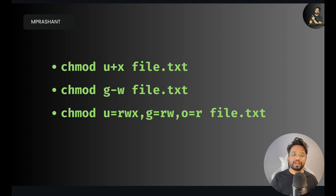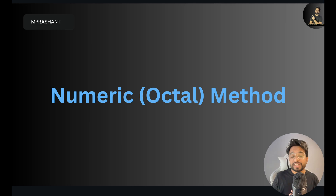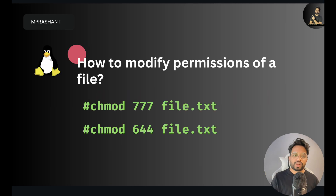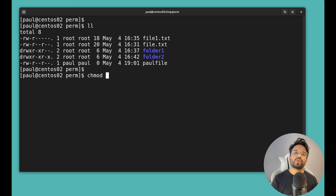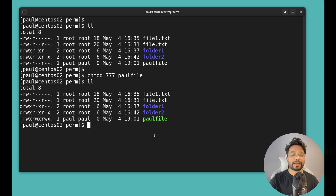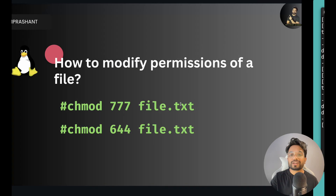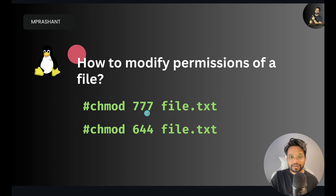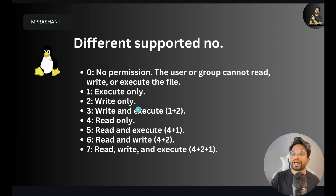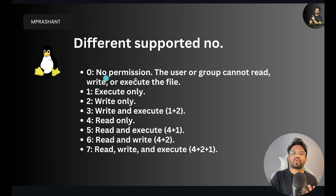Let's also talk about the numeric method to change permissions, also called the octal method. You can use numeric values with chmod, like 'chmod 777 filename'. This is a shortcut — if you want to provide all permissions to a file, simply use 'chmod 777'. There are three numbers: the first is for user, the second for group, and the third for others. The number 7 means read, write, and execute — all permissions.